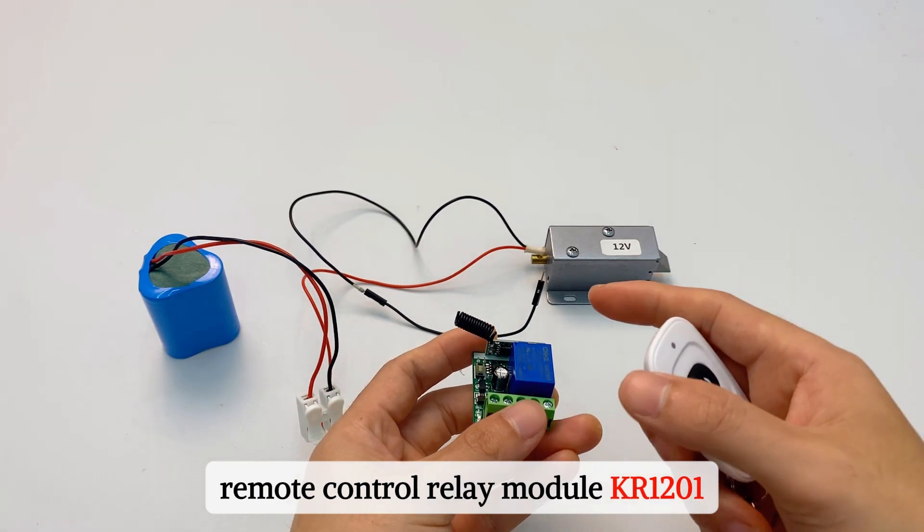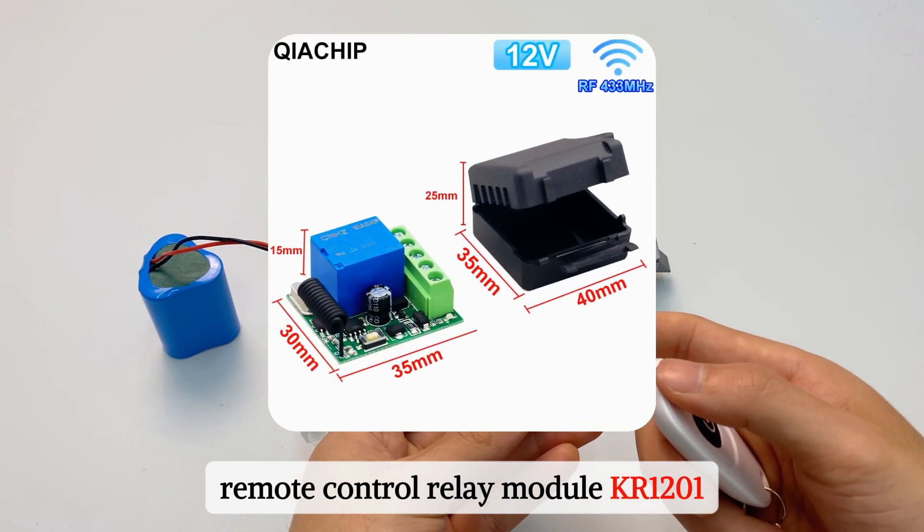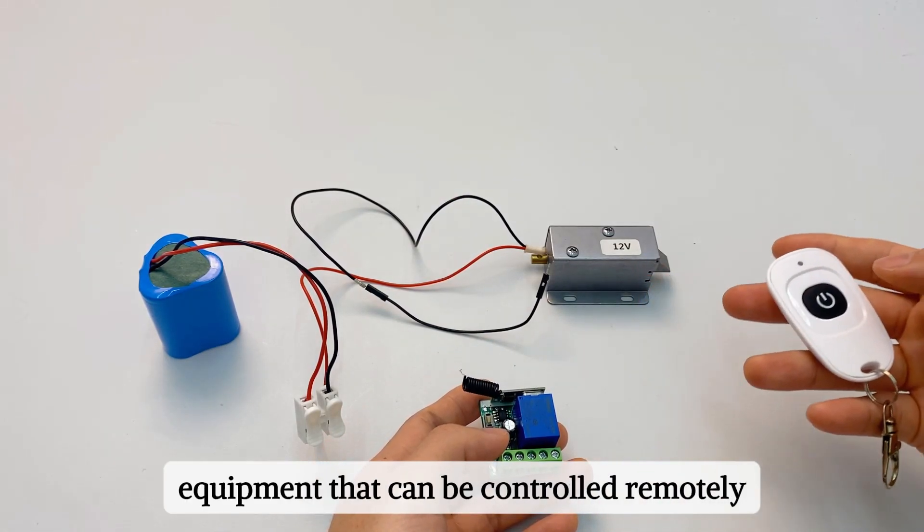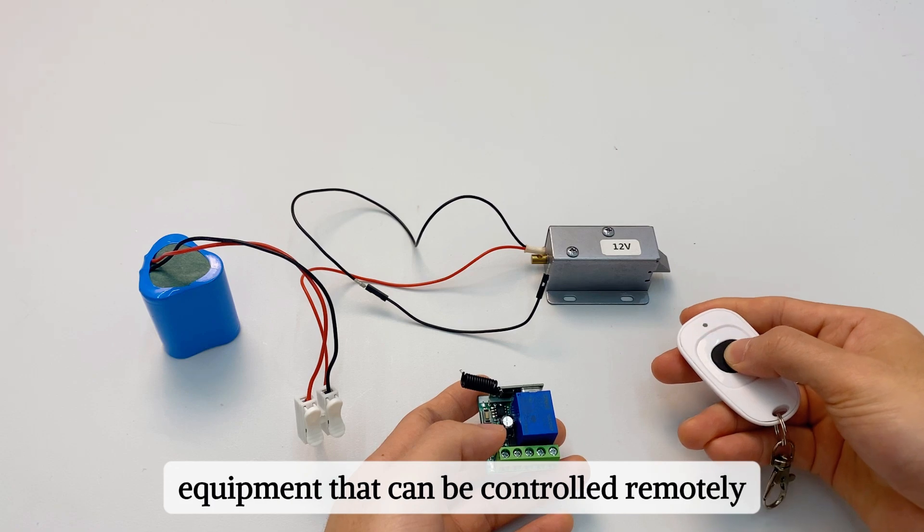We need to match this remote control relay module KR-1201, make this solenoid door lock into equipment that can be controlled remotely.